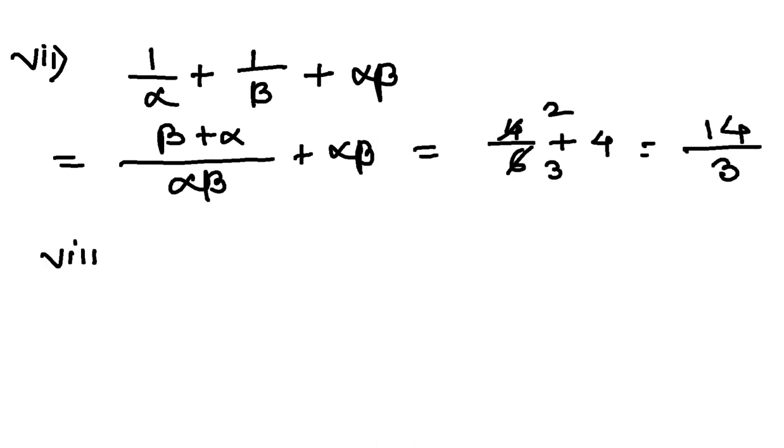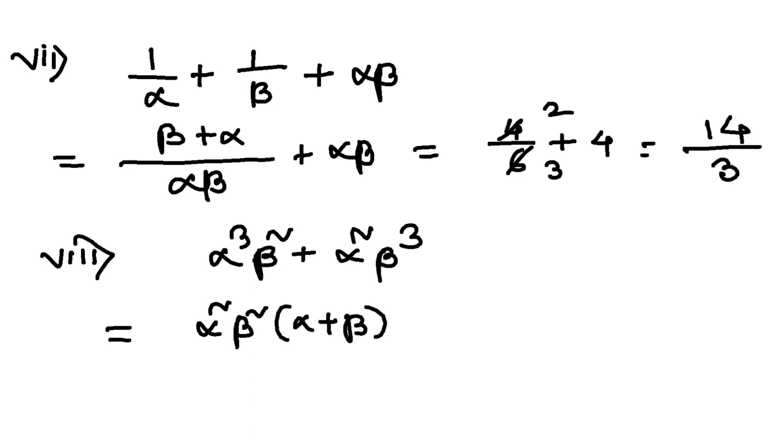And finally, the last expression, we have alpha cubed beta squared plus alpha squared beta cubed. So what is common from these two? Alpha squared beta squared is common, left with alpha plus beta. This can be written as alpha beta whole squared into alpha plus beta. Alpha beta whole squared means 6 squared into alpha plus beta is 4.